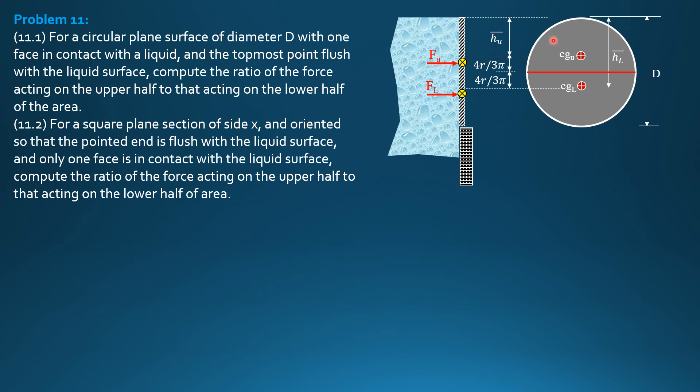This is barred h upper, barred h lower. The ratio F upper over F lower equals specific weight times barred h upper times area over specific weight times barred h lower times area. Take note that the areas of the upper half and lower half are equal, so they cancel, and specific weight also cancels. The ratio reduces to the ratio of barred h upper and barred h lower.